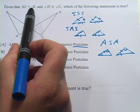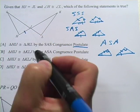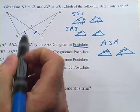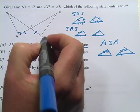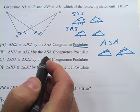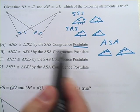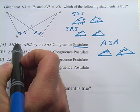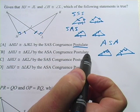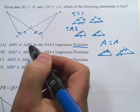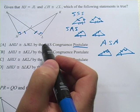It says: given that HJ equals JL. So HJ is this line and JL is this line, so they're congruent sides. And then it says angle H is congruent to angle L — so these two angles. Then it asks which of the following statements is true. It has different postulates saying that the triangles are congruent to each other. But what we have so far is one angle and one side, and all of these congruence postulates need a little bit more than that.